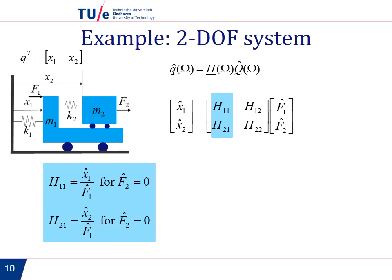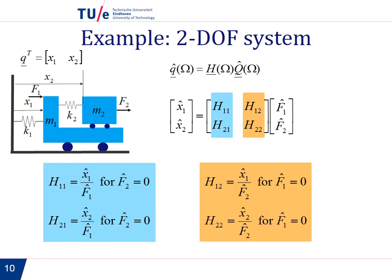In the same way for the second column, we set force 1 to 0. And H12 is the ratio of x1 to F2, and H22 is the ratio of x2 to F2. And in this way, we can understand the whole matrix.